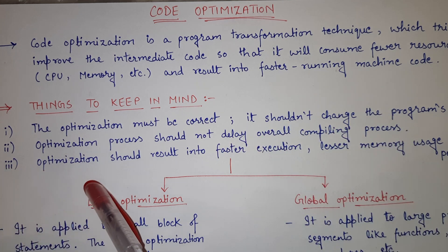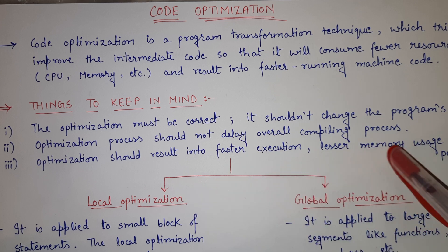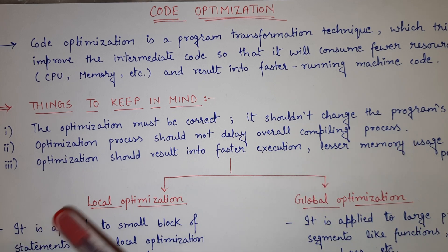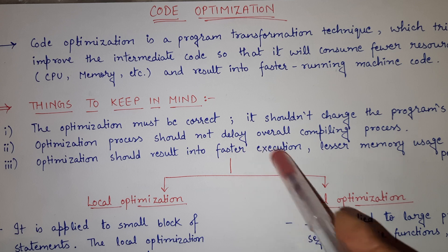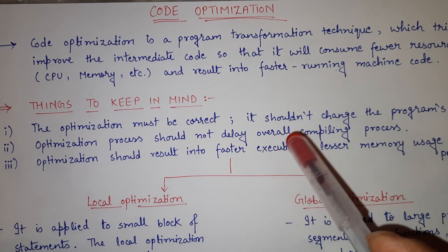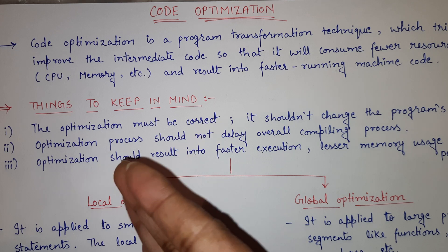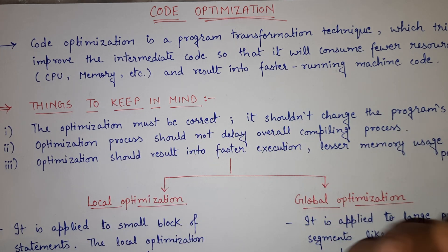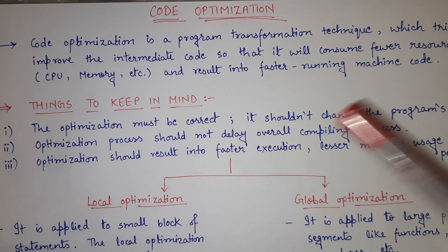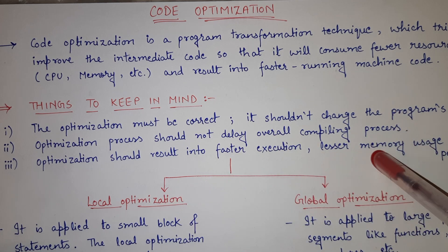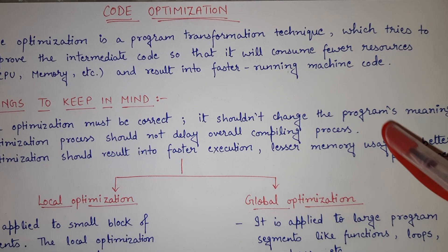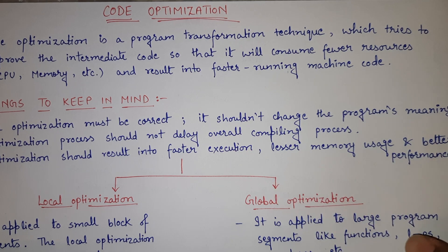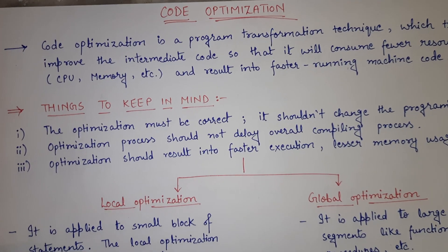The third one is: optimization should result in faster execution, lesser memory usage, and better performance. The main aim is that your new optimized code should be faster in execution, take less memory comparatively, and give you better performance. These are the three main things we want after code optimization: faster execution, lesser memory usage, and better performance.